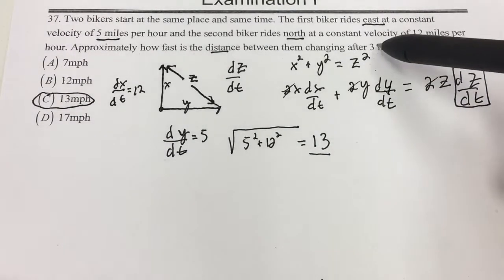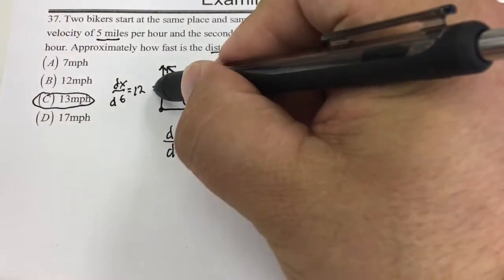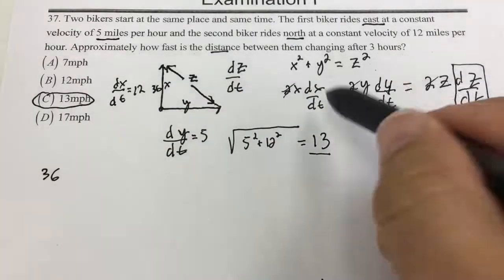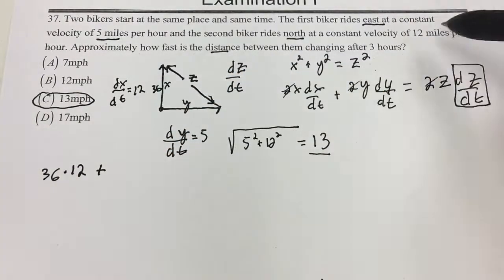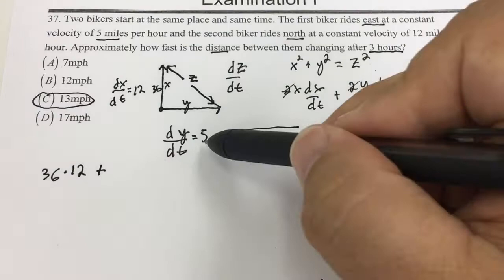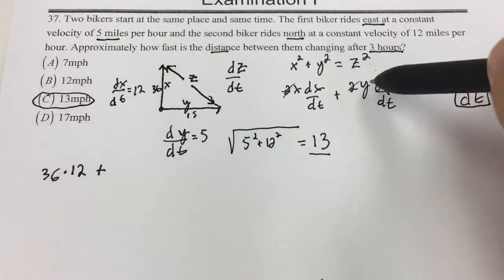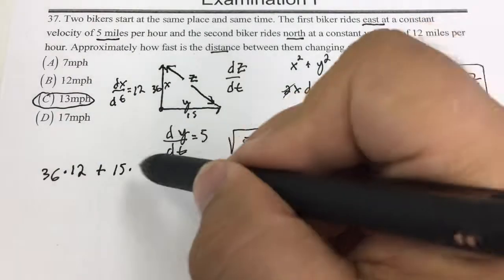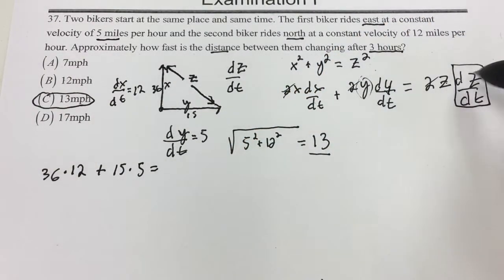After 3 hours, x is 3 times 12, so he will have traveled 36 miles. So it's going to be 36 times dx/dt, which is 12, plus — after 3 hours at 5 miles per hour — this distance will be 15, so the y value will be 15 times the rate, which is dy/dt, which is 5. That's going to equal z times dz/dt.